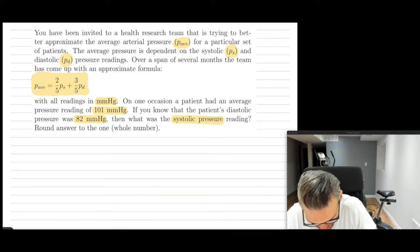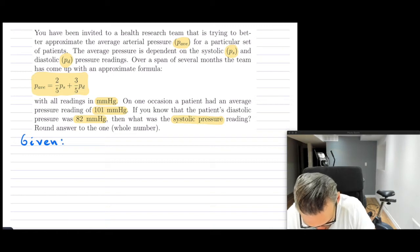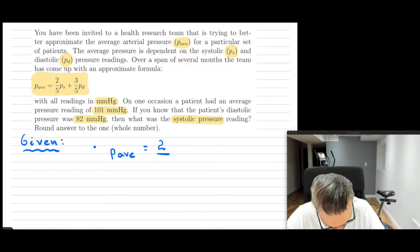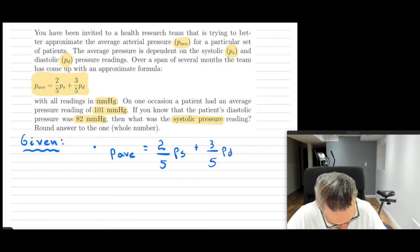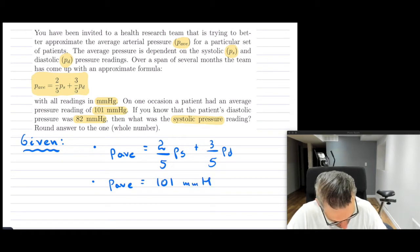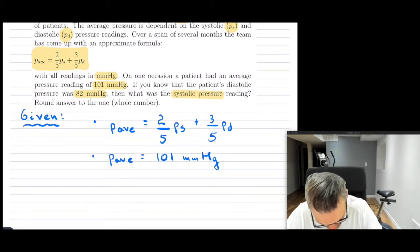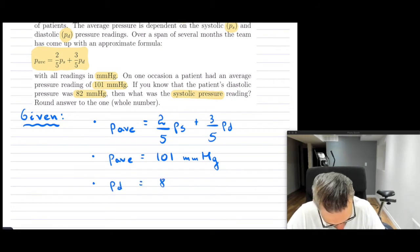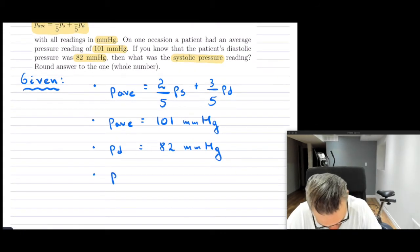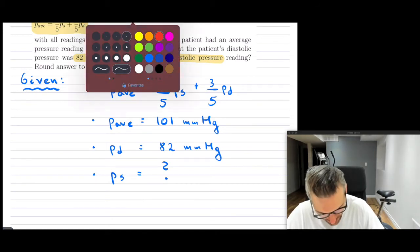Let's write down the givens. Whenever I tackle word problems, I write down and break down the givens. We've been given the actual formula which is P_ave = 2/5 PS + 3/5 PD. We've been given the average, which is equal to 101 millimeters of mercury. We have been given the diastolic one, PD, that is 82 millimeters of mercury. And now we're looking for the systolic one, so this is the one that we're going to be trying to find out.